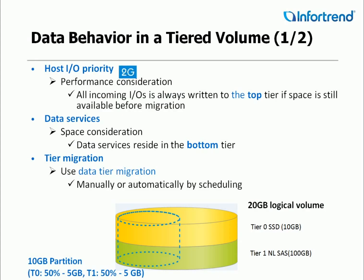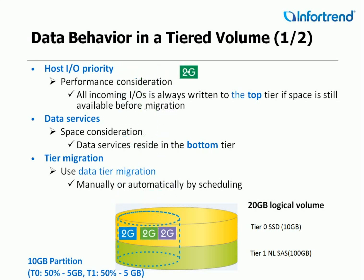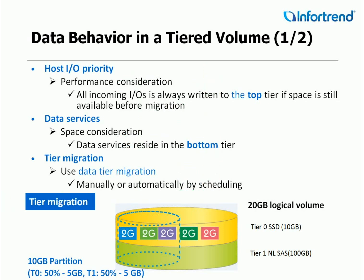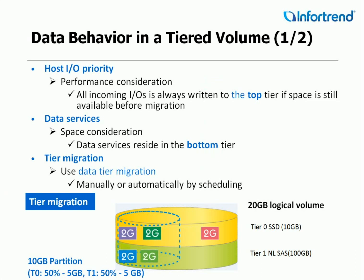Let's use a 20GB logical volume with tier 0 and tier 1 as an example. All incoming input and outputs are written to the top tier. When it is full, it moves the colder data to the second tier, and so on. All data services are allocated to the bottom tier because high performance is not required.